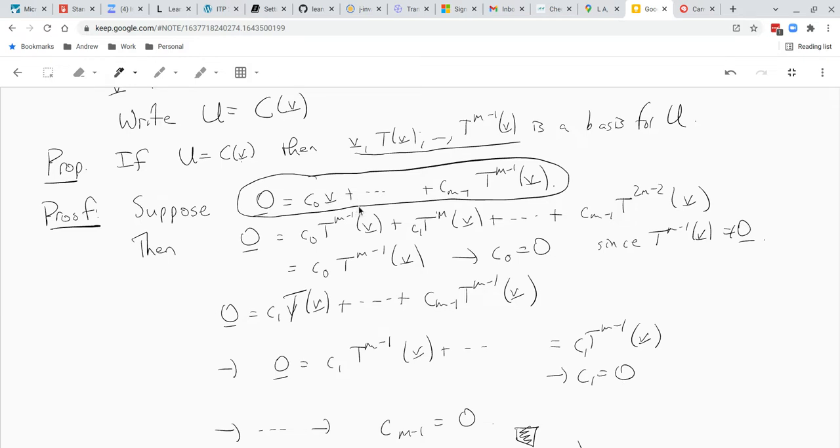Now you have an equation like c2 t squared of v plus dot dot dot. And you use that to show that c2 equals zero. And you go step by step eventually showing that c m minus 1 is zero. All the coefficients are zero. Tell you that this equation only has a trivial solution. c0, c1, all zero. In particular, these vectors are linearly independent. That's what we wanted to show.